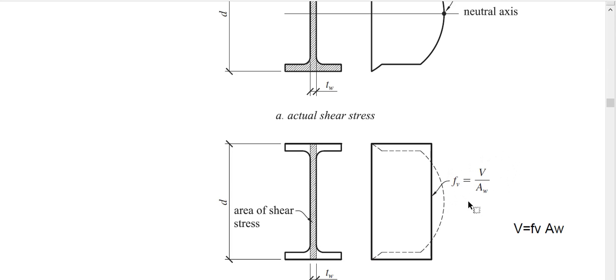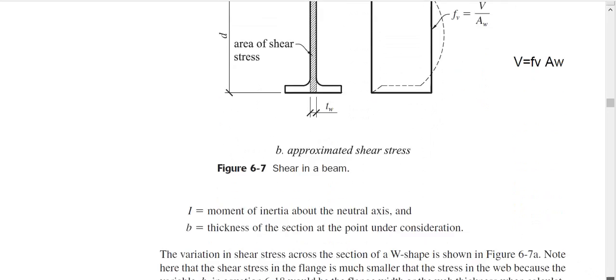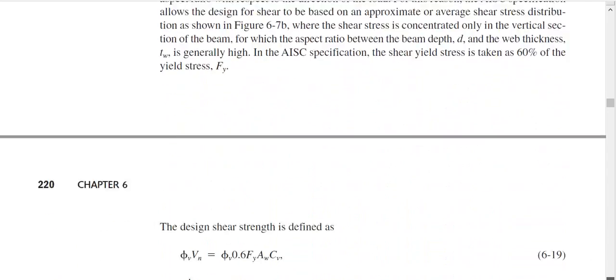So if I rearrange this equation it will be like this: V equals FV times AW. FV is the allowable shear stress. AW is the area of the web. Now again this is not the area of the exact web, it is D times TW. Now how to design? When you design, we multiply both sides by a factor of safety or we call strength reduction factor.